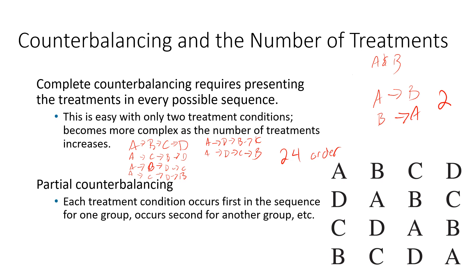Instead, we can use partial counterbalancing, where each treatment condition occurs first in sequence for one group, second for another, and so on. So you'd have A-B-C-D, B-C-D-A, C-D-A-B, and D-A-B-C — each group starts at a different point in the order. This is acceptable for some fatigue and practice effects, but becomes less effective when there are asymmetrical order effects, since certain transitions like A-to-B might cause a bigger change than others and won't appear equally across all groups.